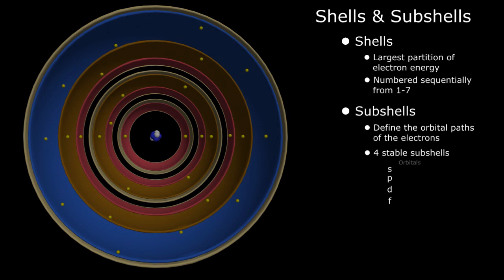Each subshell contains an odd number of orbitals, with S having 1, P 3, D 5, and F 7, and each orbital can hold a maximum of two electrons. Therefore, the S subshell can have a maximum of two electrons, P 6, D 10, and F 14.